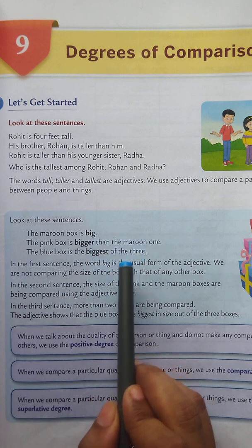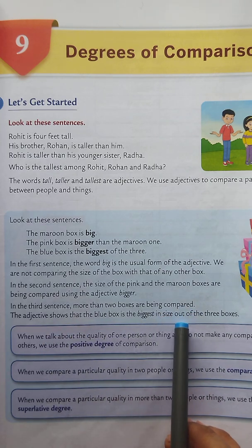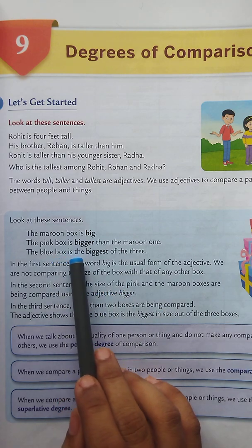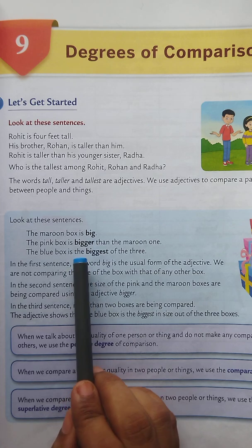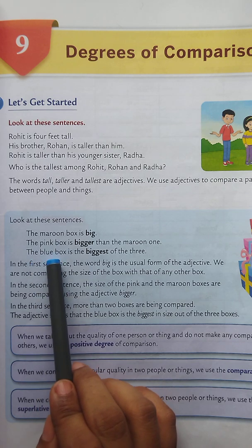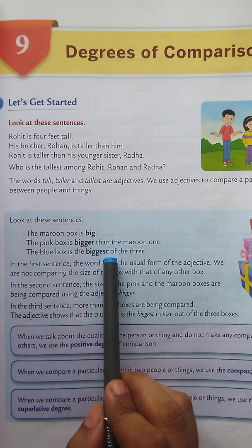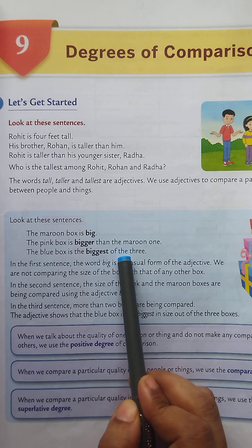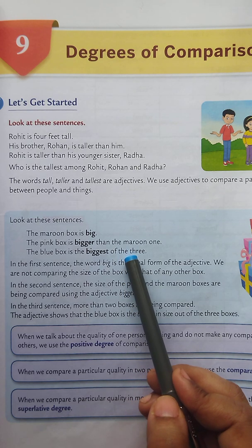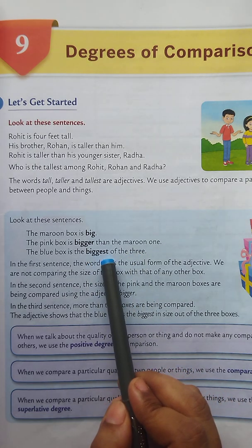The third sentence is: the blue box is the biggest of the three. Here, more than two boxes are being compared. The adjective shows that the blue box is the biggest in size out of the three boxes. We are comparing three boxes — the maroon, the pink and the blue box. So here I am using the superlative degree of adjective. When we compare more than two persons or more than two things, we use the superlative degree. Biggest is the superlative degree.